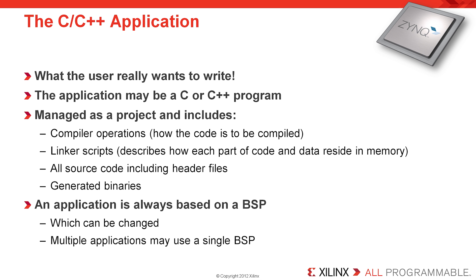The C and C++ application is where the software engineer really wants to be. Both C and C++ are supported within SDK. These projects are managed as a complete project and include compiler options — that is to say, how the code is to be compiled, whether there are additional symbols, optimizations, etc. There are linker scripts which describe how each section of the code and data sections reside in memory and in which memory. All of the source code, including the header files, is kept within this project, as are any of the generated binaries. An application is always based on a BSP.